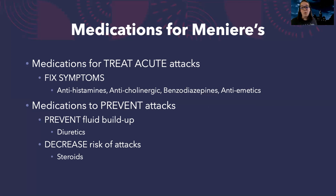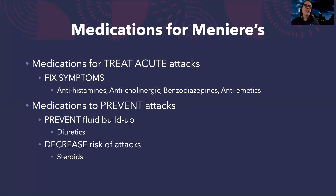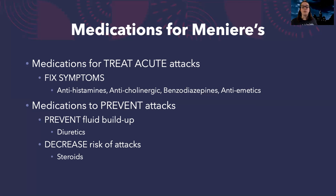In between attacks, I want to prevent those attacks. My two main medications for prevention are going to be diuretics, because those are going to prevent fluid buildup, and steroids to decrease the risk of more attacks. I might have mentioned that beta blockers or calcium channel blockers are sometimes used, and that is true, but those aren't first-line treatment. The first-line treatment for symptoms is all the medications that help treat those acute symptoms. For prevention, diuretics and steroids are the top treatments. And that's really all you need to know for Meniere's.